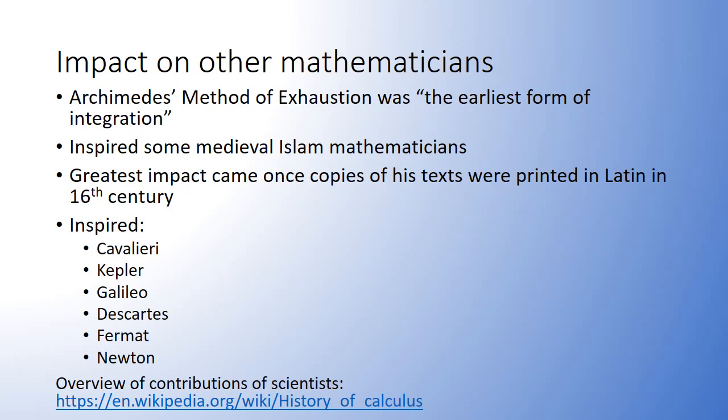Archimedes' method of exhaustion, which he used to find approximations for pi and the square root of 3 among other results, is considered by some to be the earliest form of integration. He inspired some medieval Islamic mathematicians to match and in some places improve upon his results, but his greatest impact came when copies of his texts were printed in Latin in the 16th century. Following this, his work inspired Cavalieri, who developed an improved version of the method of exhaustion.